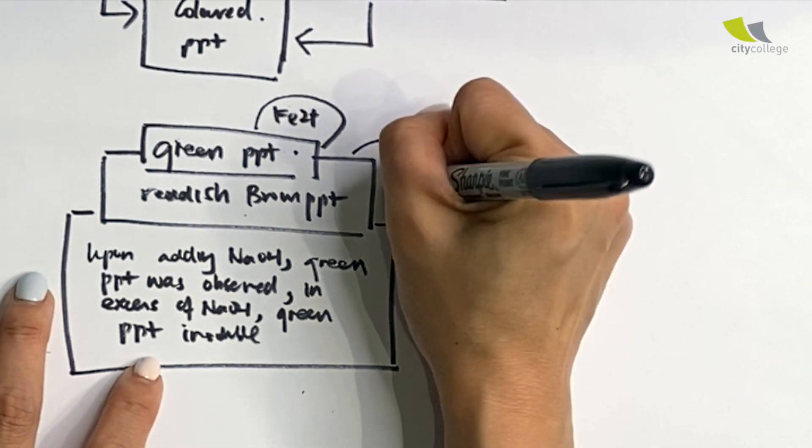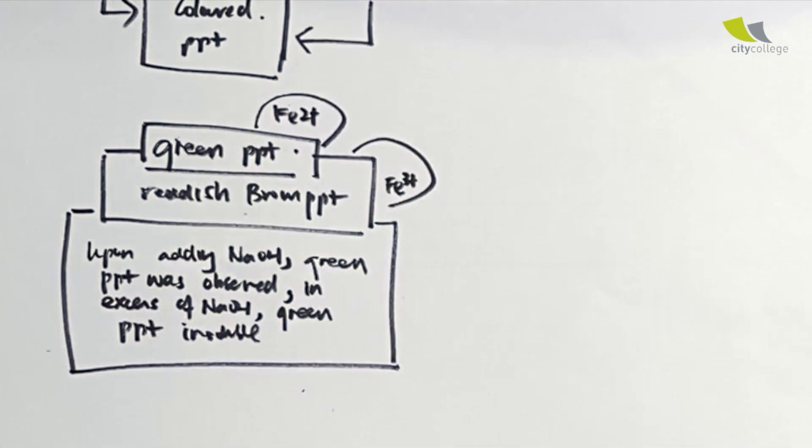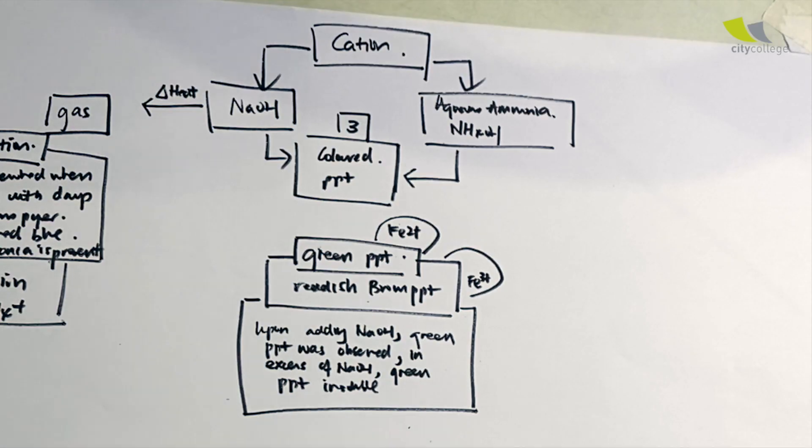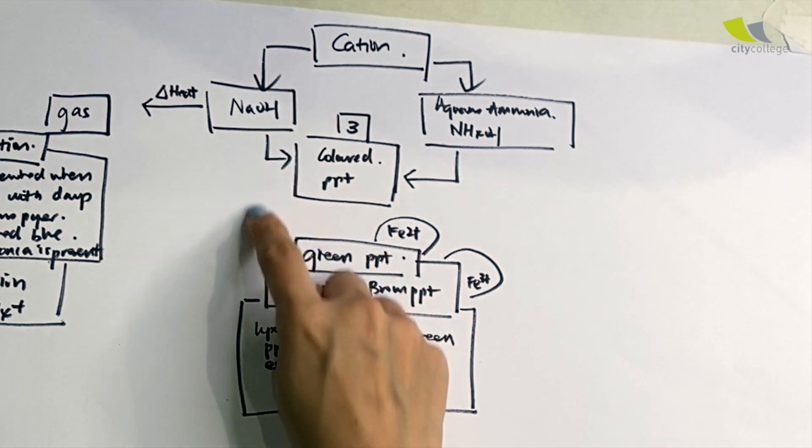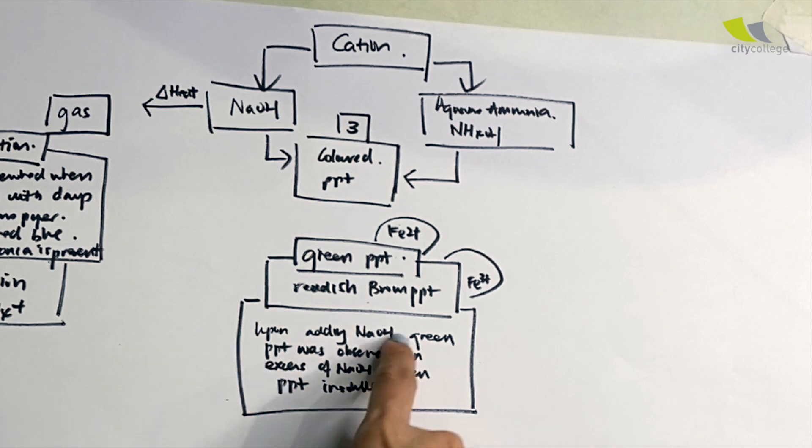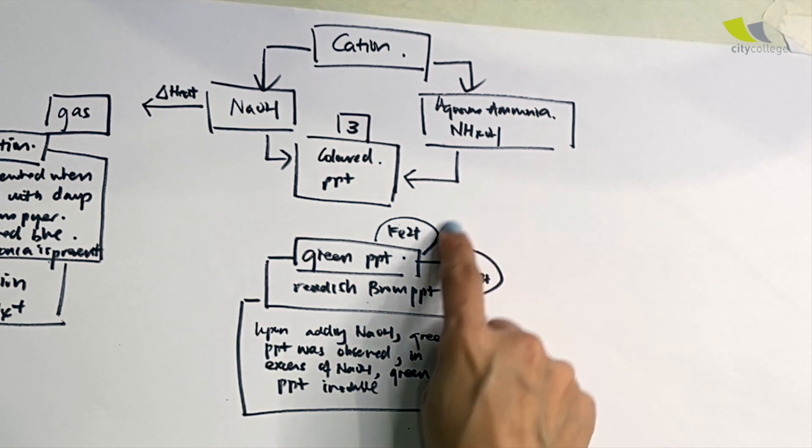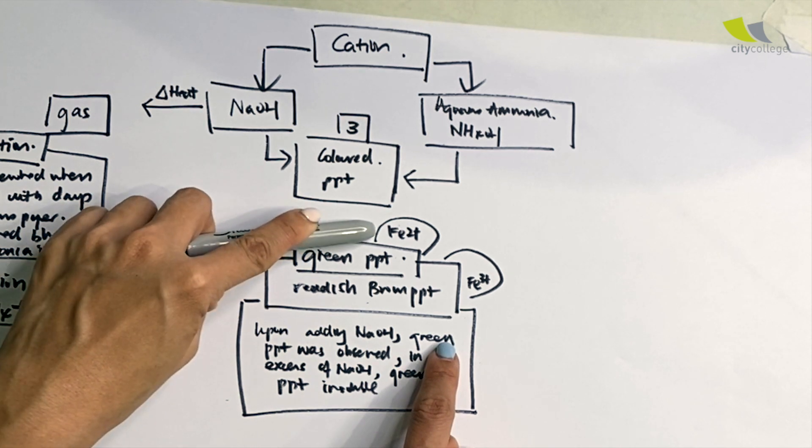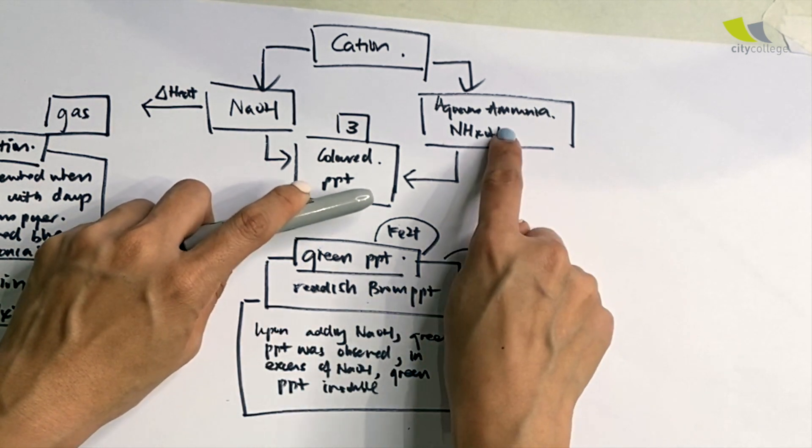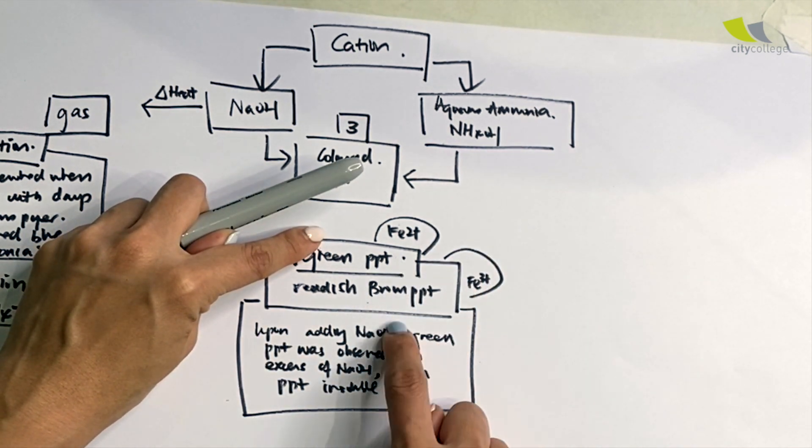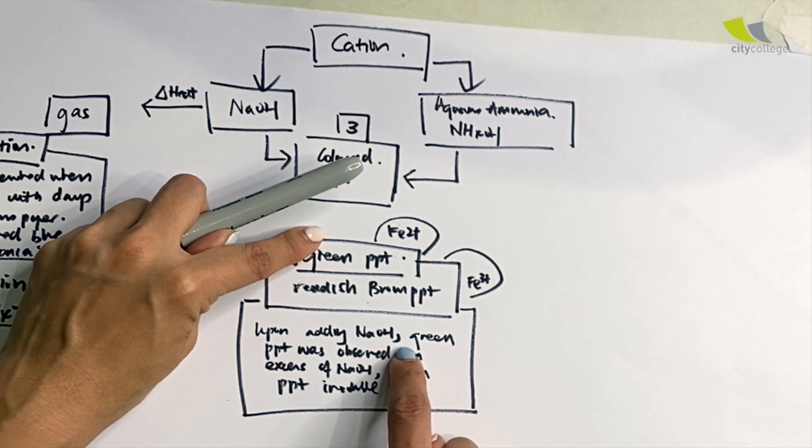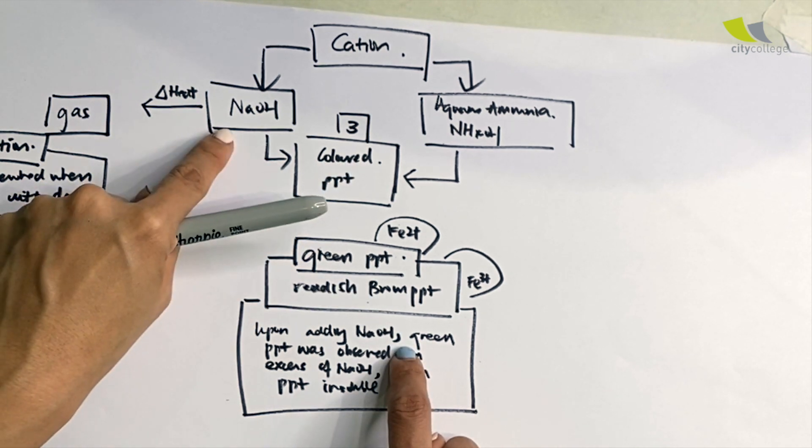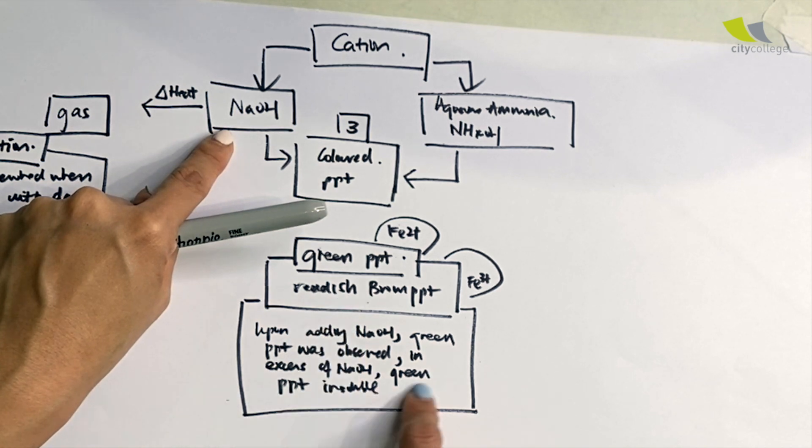I cluster them together because if it's green, it's actually Fe2+, and if it's red, it's actually Fe3+. The reason why I cluster them together is because whether I add NaOH and I see the green precipitate, if they say replace it with NH4OH, you will still see a green precipitate if Fe2+ is present.